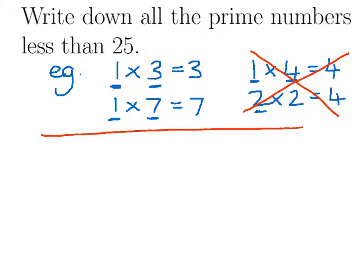To write down all of the prime numbers less than 25, we start with the number 2. That's the first prime number, because there's only one way to make it, and that's 1 times 2.